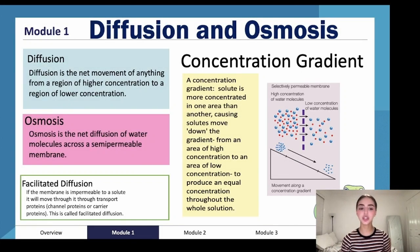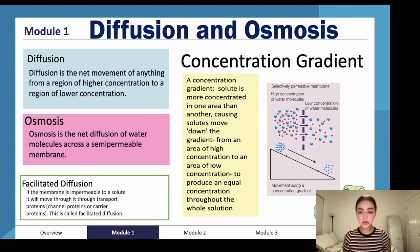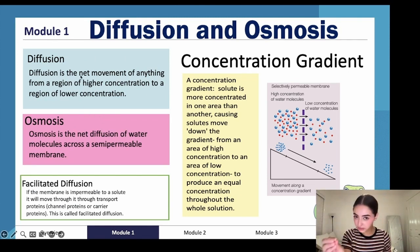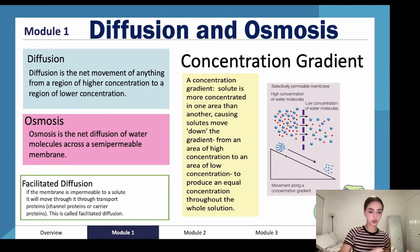We have diffusion and osmosis. Diffusion is the net movement of anything from a region of higher concentration to a region of lower concentration. Osmosis is the net diffusion of water molecules across a semi-permeable membrane. So osmosis is a type of diffusion, specifically in regards to water, whereas diffusion applies to anything.